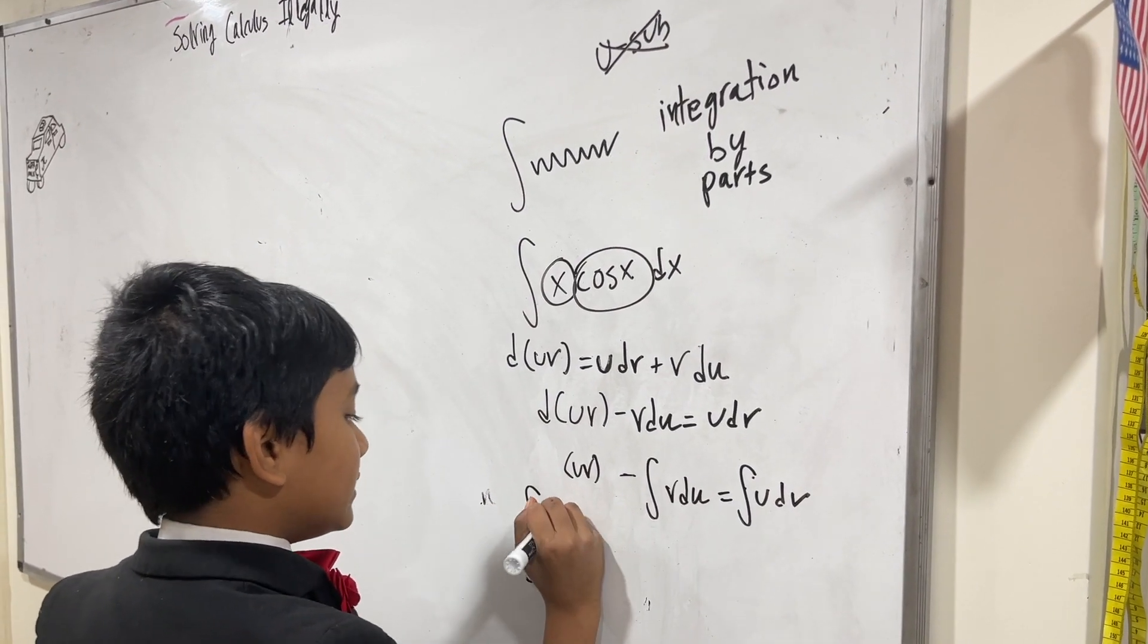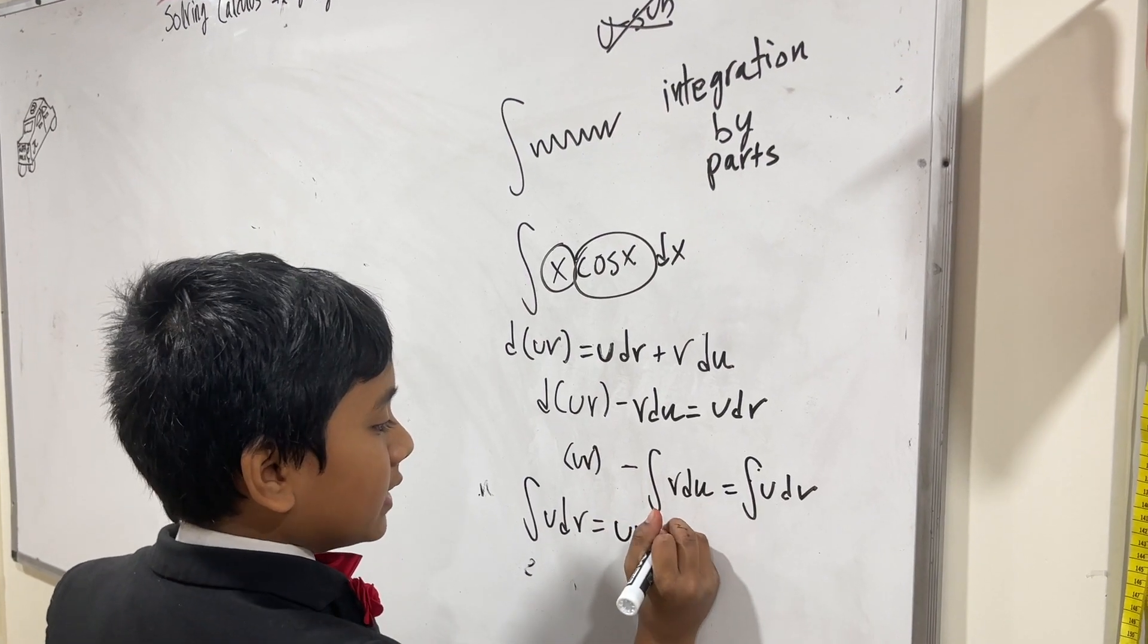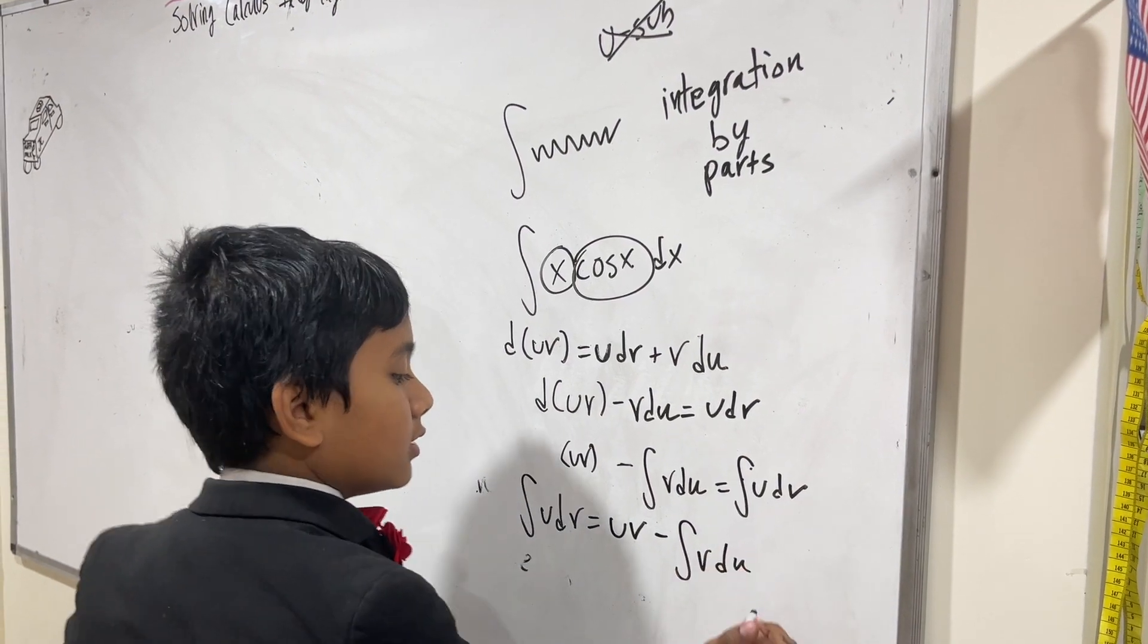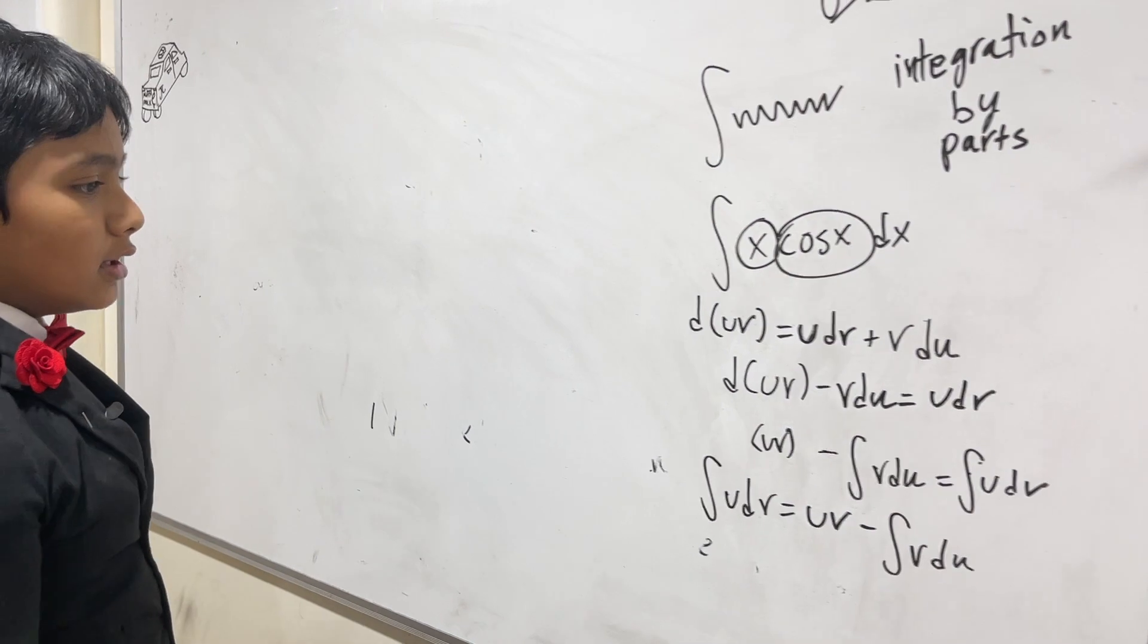The formula for this is the integral of u dv is equal to u times v minus the integral of v du. Wow, that's a lot of letters being thrown around there.